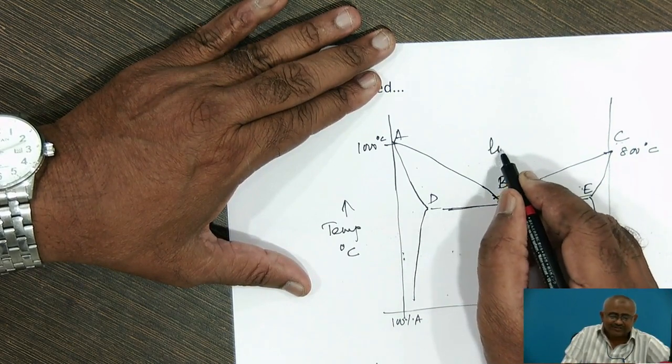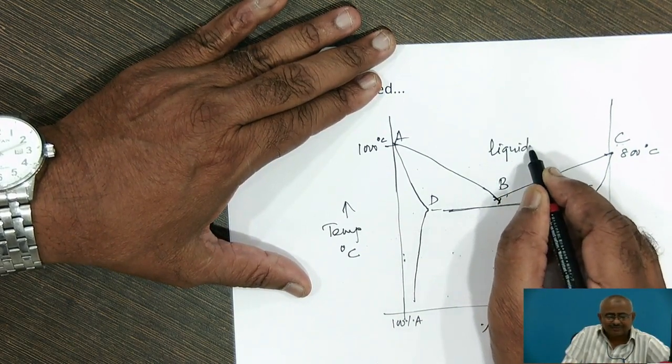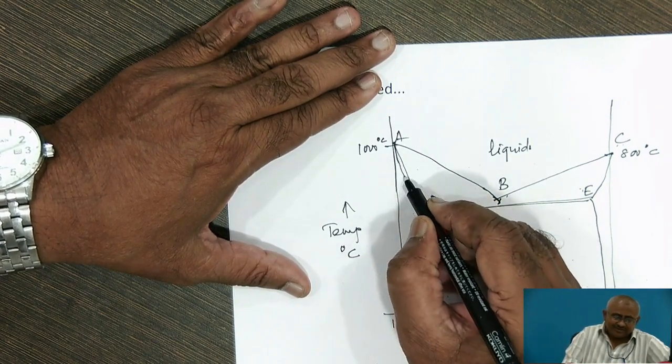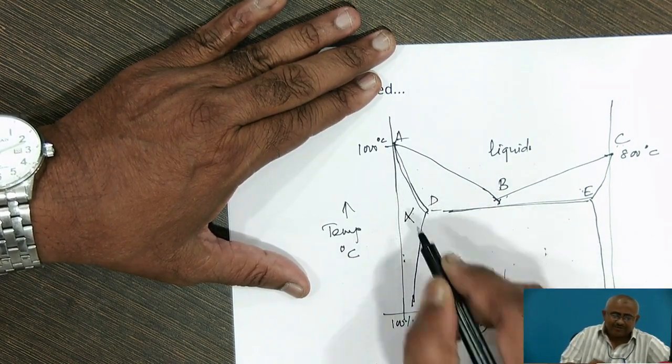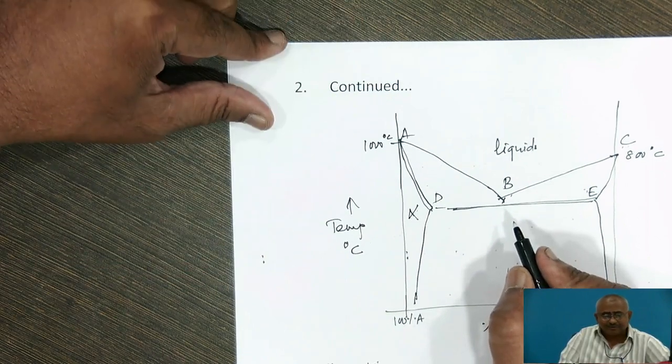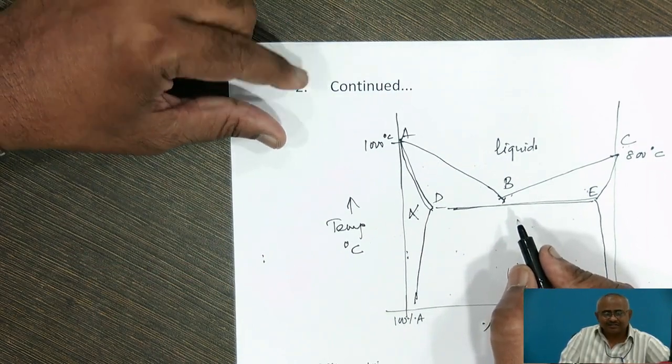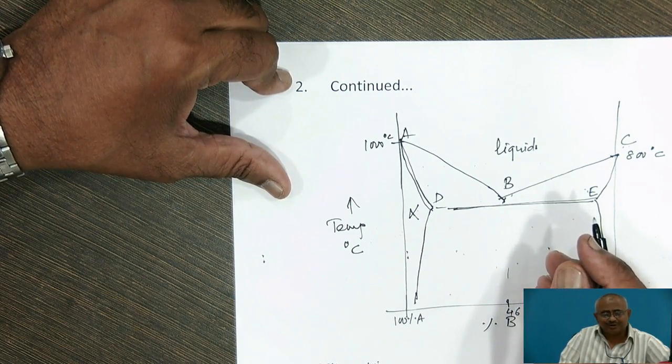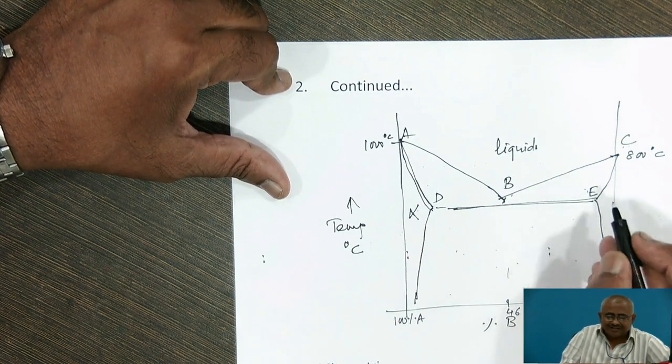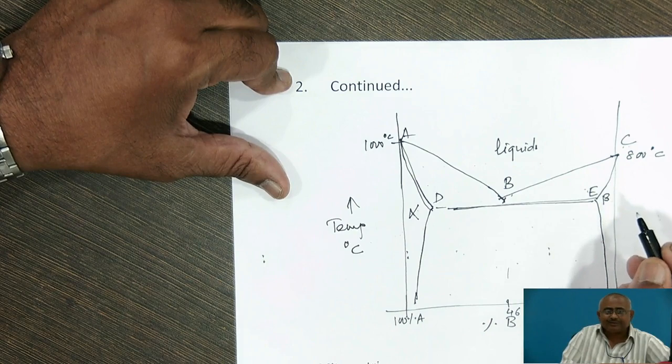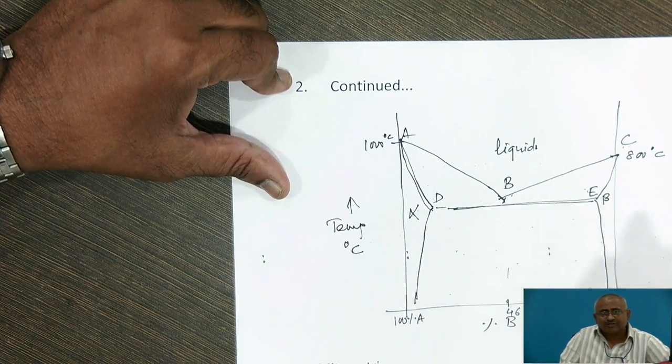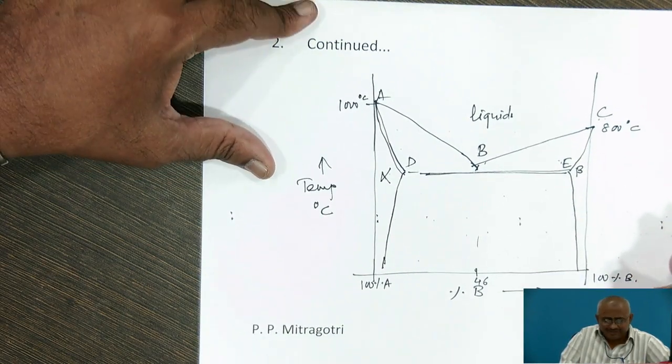In this case, above liquidus line there will be liquid phase. In between this region, there will be solid solution alpha, which is nothing but solid solution of solute B in solvent A. While on other end, there will be solid solution beta, which is solid solution of solute A in solvent B.